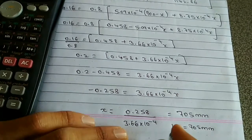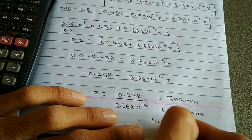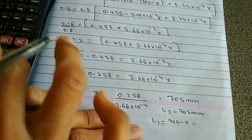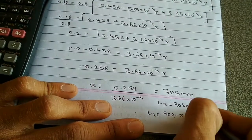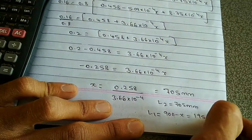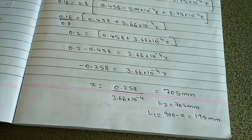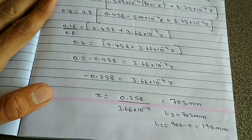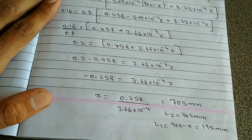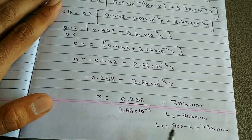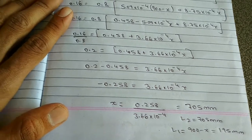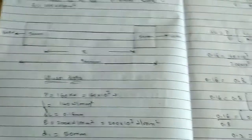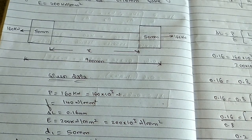For L1: L1 = 900 − x = 900 − 705 = 195 mm. This completes the problem. We have found out the length of both bars. If you like the method of solving this problem, please share and subscribe. Thanks for watching.